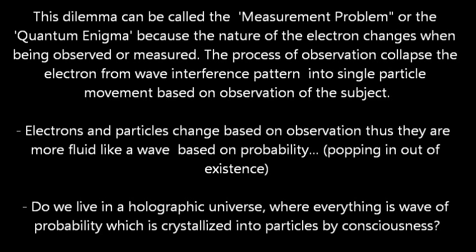This dilemma is called the measurement problem or the quantum enigma, because the nature of the electron changes when being observed or measured. The process of observation collapses electrons from wave interference patterns into single particle movement based on the observation of the subject. A particle is more like a wave interference pattern, and those wave interference patterns represent the probability of where it could be. When not observed, the particle sits as a wave; when observed, the wave collapses and the particle's location is determined.